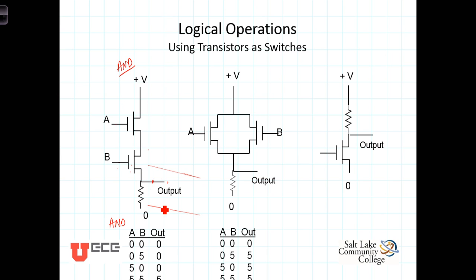So the AND gate output is five volts only when both A and B are high. If A and B are both zero, output is zero. A zero and B five gives zero output. A five and B zero still gives zero output. Both A and B must be positive to pull the output to five volts.